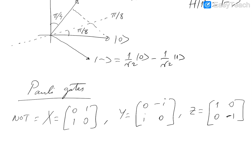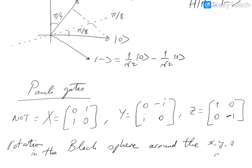These gates correspond to rotations around the X, Y, Z axes in the Bloch sphere. Pauli gates rotate the Bloch sphere exactly 180 degrees about the X, Y, Z axes respectively. The X gate rotates the Bloch sphere around the X axis by 180 degrees (π radians). The Z gate is a phase flip gate — it flips the relative phase of the qubit and rotates around the Z axis by 180 degrees. Similarly for the Y gate.